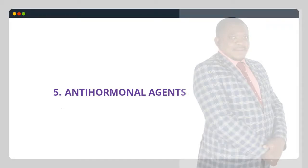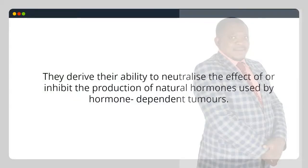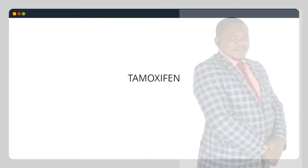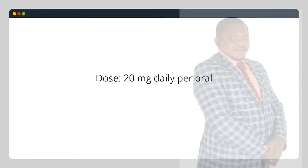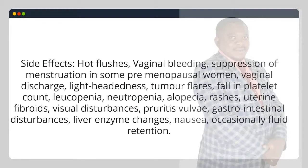5. Anti-hormonal agents: they derive their ability to neutralize the effect of or inhibit the production of natural hormones used by hormone-dependent tumors. Tamoxifen — indication: an estrogen receptor antagonist used in estrogen receptor positive metastatic breast cancer. Dose: 20 mg daily per oral. Side effects: hot flushes, vaginal bleeding, suppression of menstruation in some pre-menopausal women, vaginal discharge, lightheadedness, tumor flares, fall in platelet count, leukopenia, neutropenia, alopecia, rashes, uterine fibroids, visual disturbances, pruritus vulvi, gastrointestinal disturbances, liver enzyme changes, nausea, occasionally fluid retention.